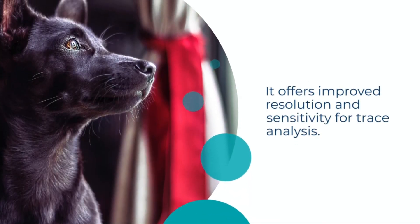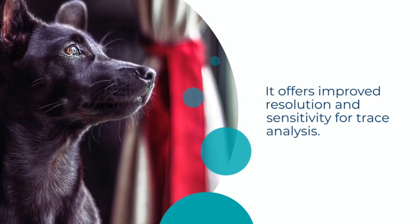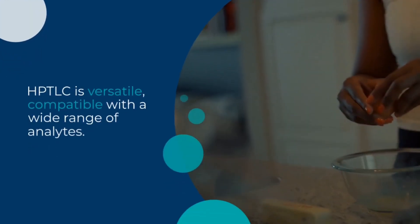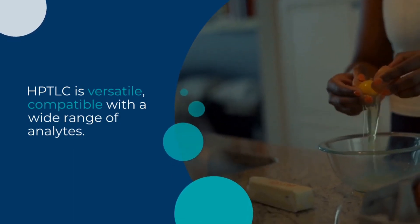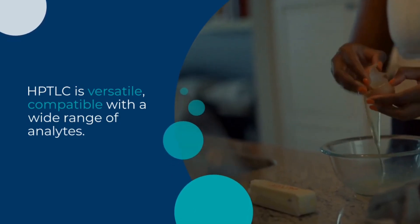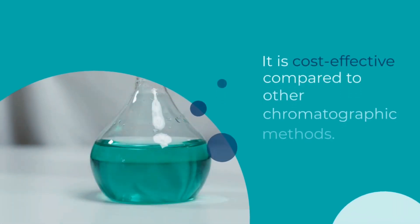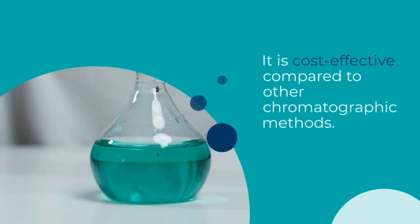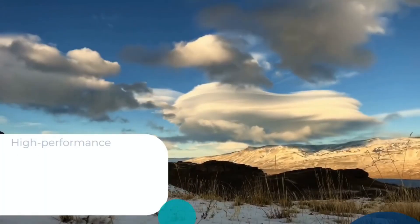3. Development: After sample application, the TLC plate is placed vertically in a developing chamber containing a mobile phase. The mobile phase is a solvent or a mixture of solvents that moves up the plate by capillary action. The analytes in the sample mixture interact with the stationary phase and mobile phase, resulting in their separation.